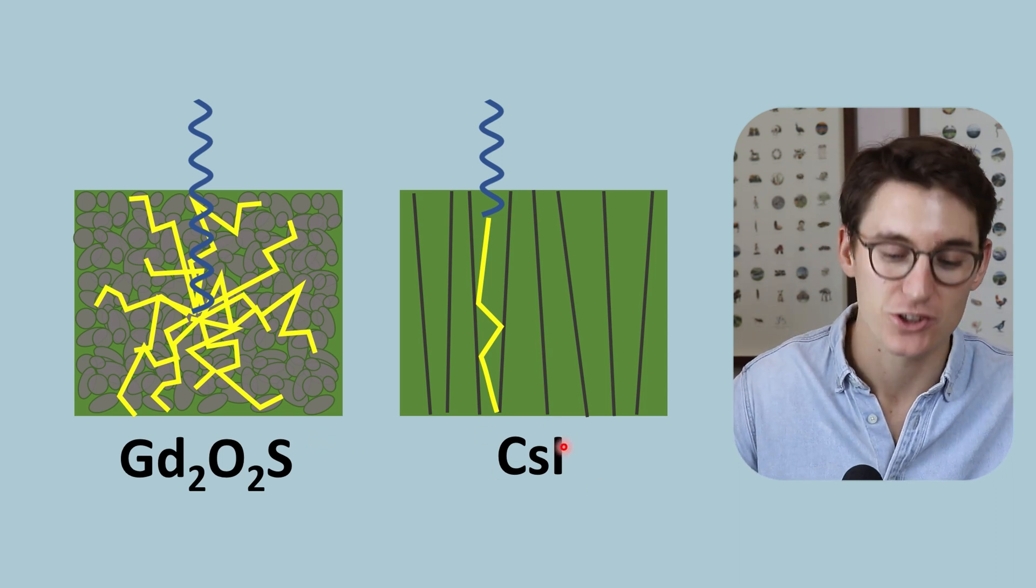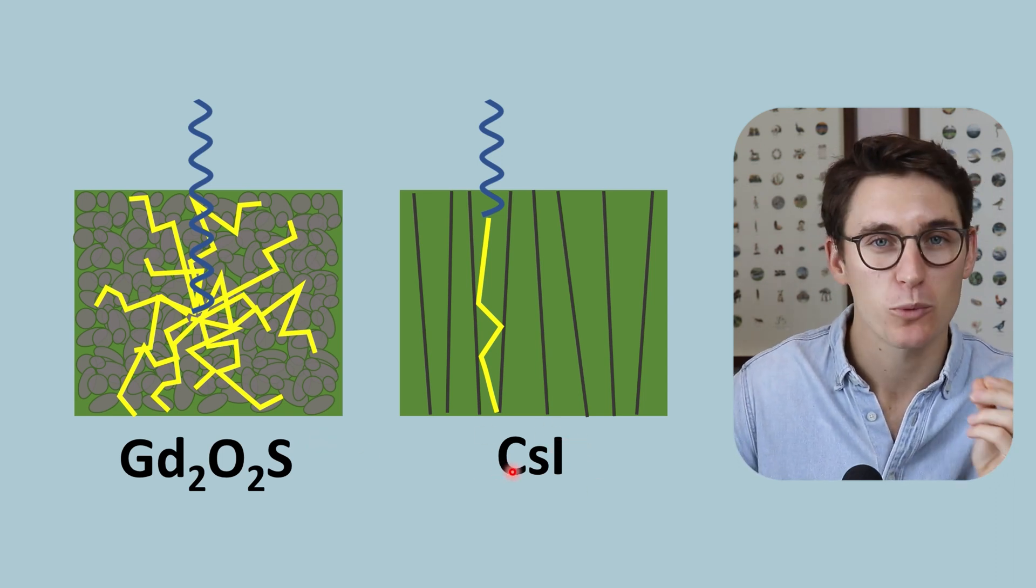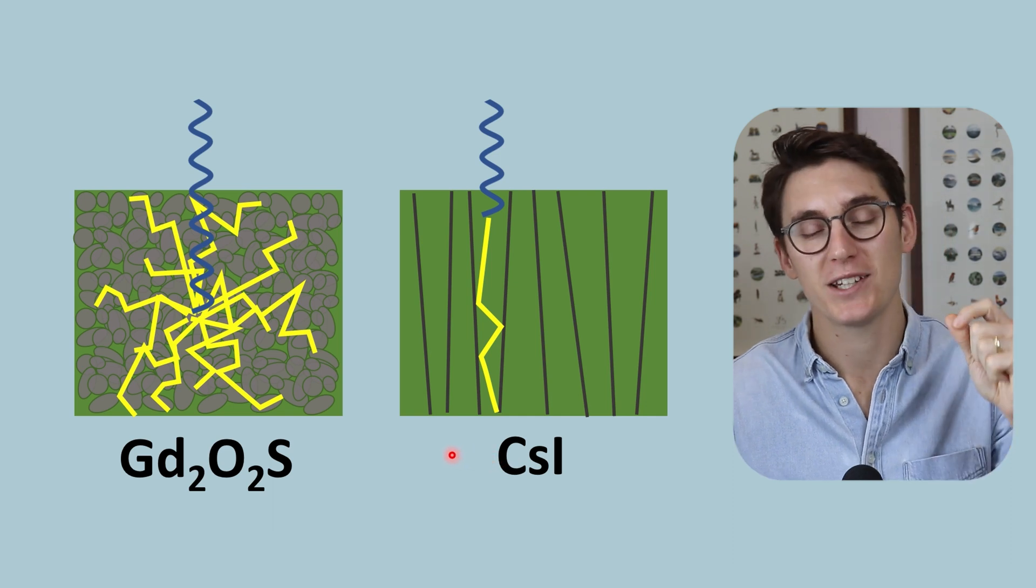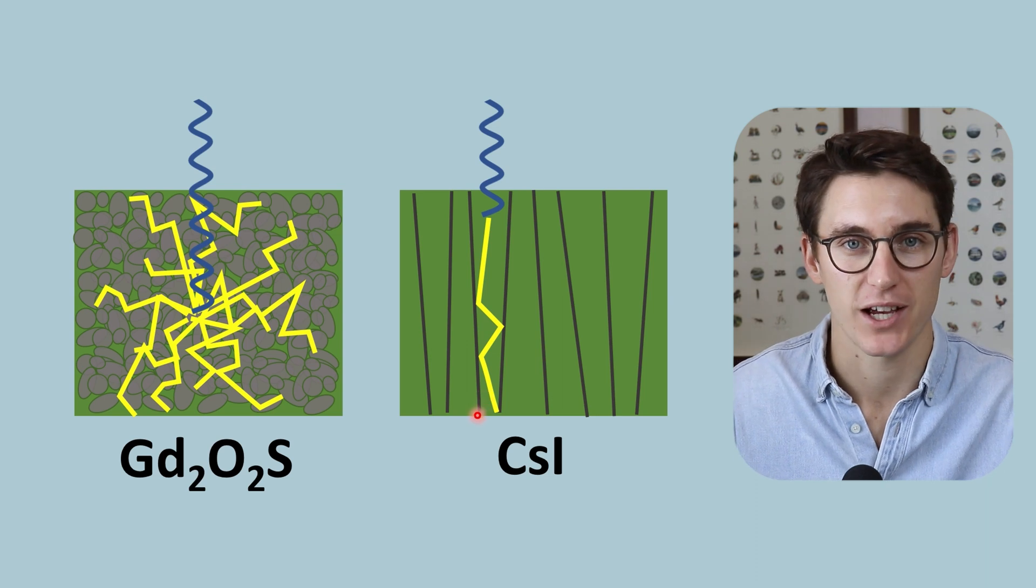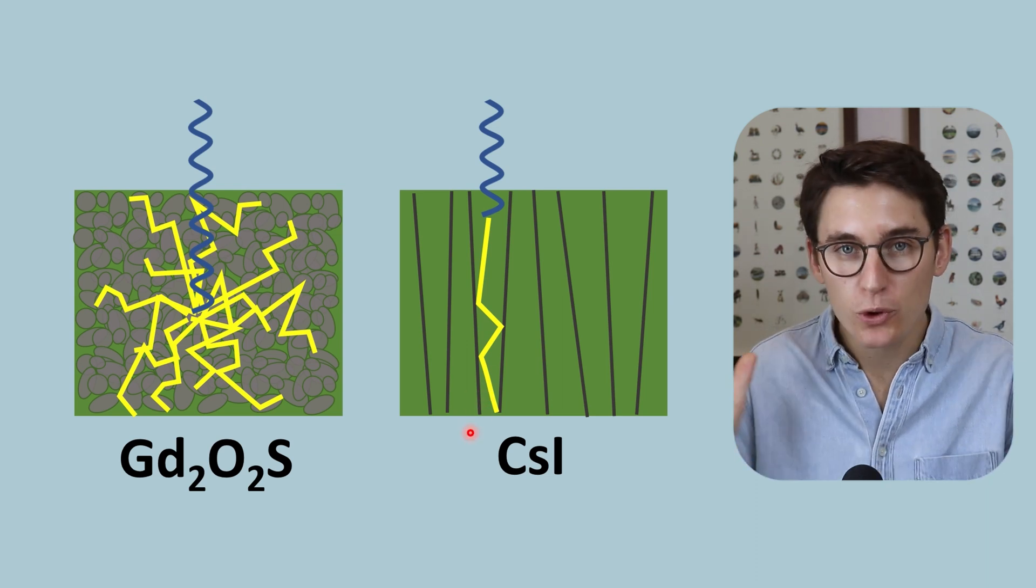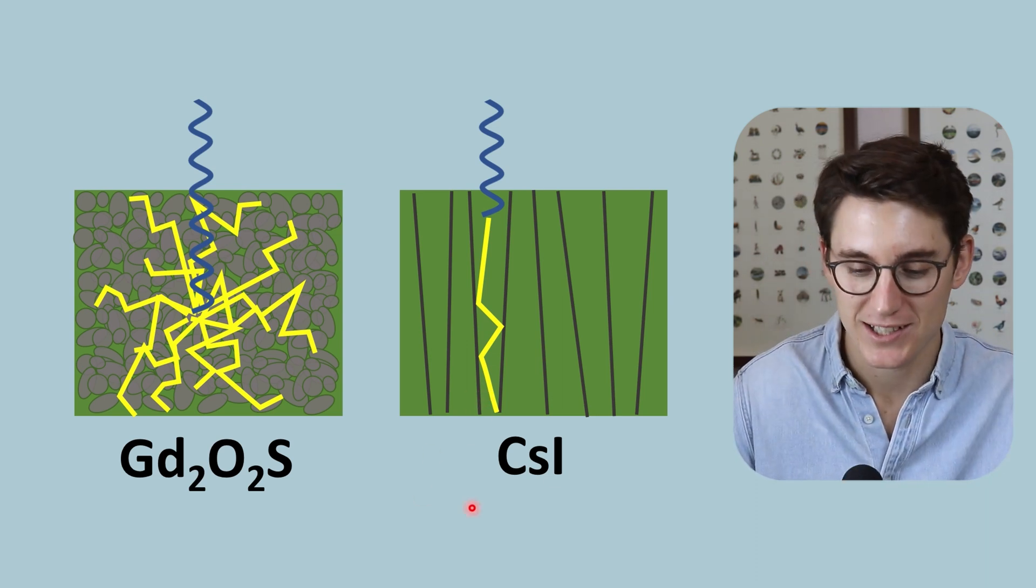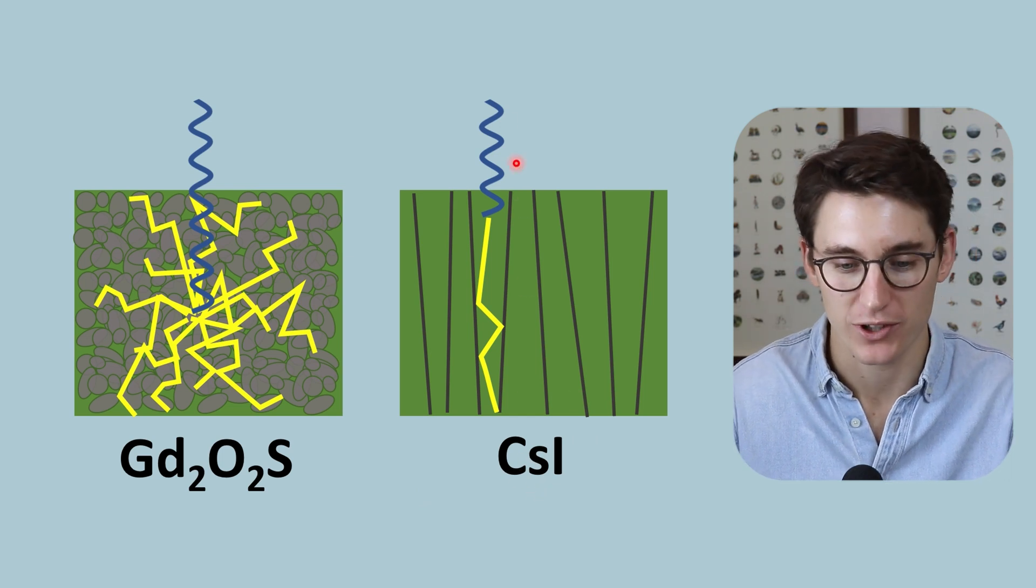Now our direct digital radiography systems are much more sensitive to light. We don't need that high light intensity. We are able to detect much lower intensities of light. What we want is improved spatial resolution, and our cesium iodide allows us to do that.